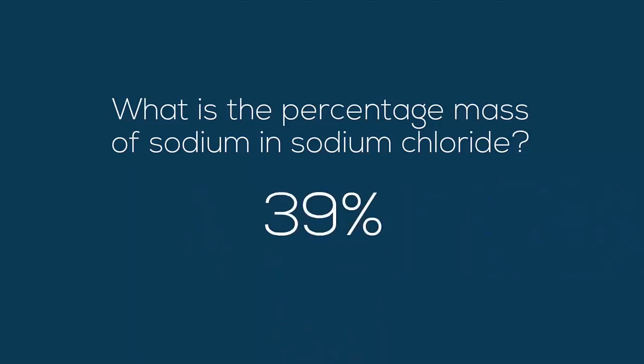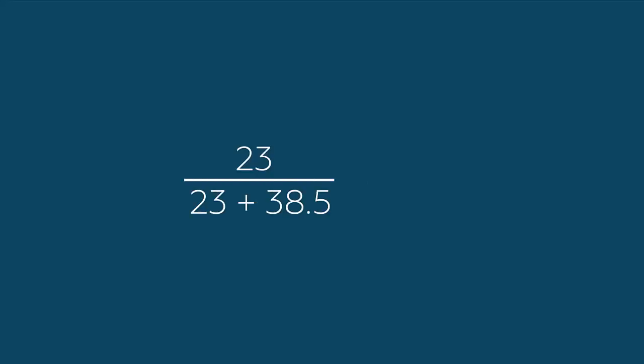Sodium makes 39% of the mass. We get that number by dividing 23 by the sum of 23 and 35.5, giving us 0.39, which we multiply by 100. Did you get that right?